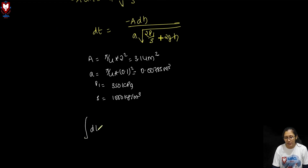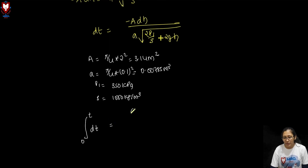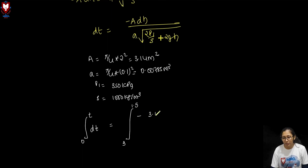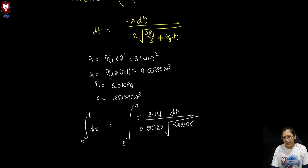Substituting values into the integral: T = ∫ from H=3 to H=1.5 of [−400.2 dH / √(700 + 19.62H)]. The numerical coefficient −A/a simplifies to −400.2, with 2P1/ρ = 700 m²/s² and 2g = 19.62.